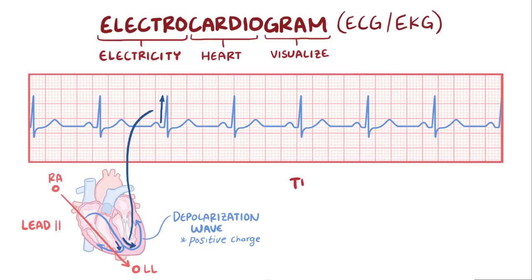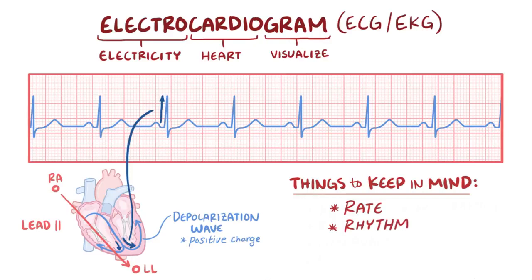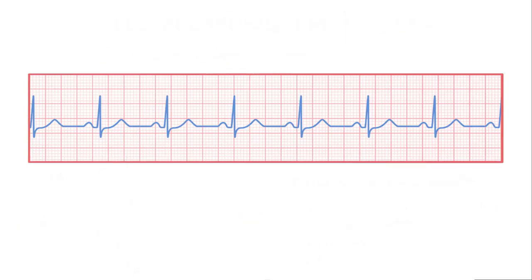To read an ECG, there are a few key elements to keep in mind. One of them includes figuring out the rate and the rhythm. Now, there are a couple ways of figuring out the heart rate on an ECG. The first one is called the box method because you count the number of boxes between heartbeats.